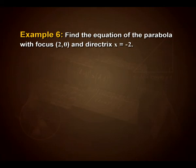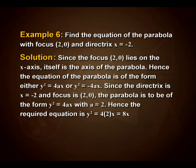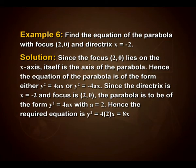Example: find the equation of the parabola with focus (2, 0) and directrix x = −2. Since the focus (2, 0) lies on the x-axis, the x-axis is the axis of the parabola. Hence the equation is of the form y² = 4ax or y² = −4ax. Since the directrix is x = −2 and the focus is (2, 0), the parabola is of the form y² = 4ax with a = 2. Hence the required equation is y² = 8x.